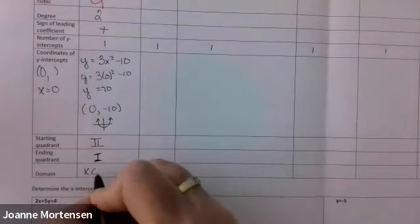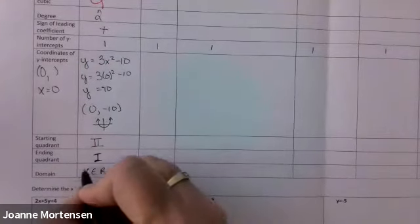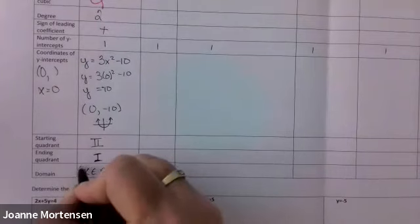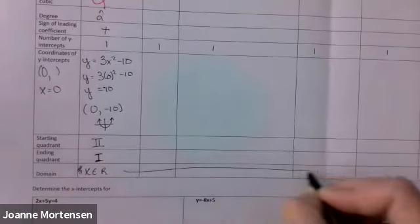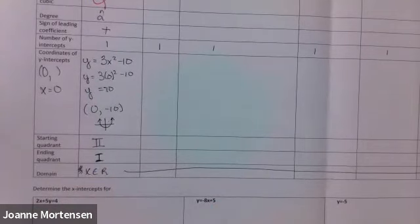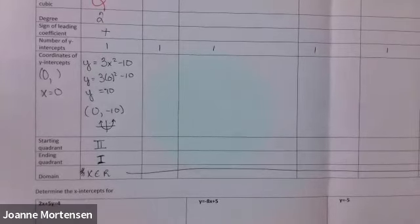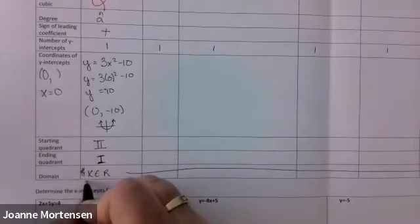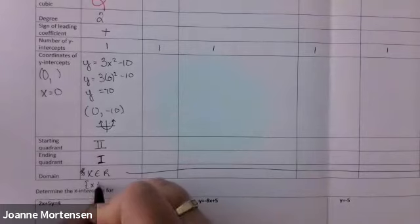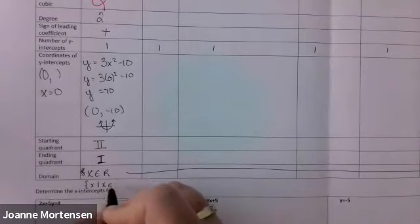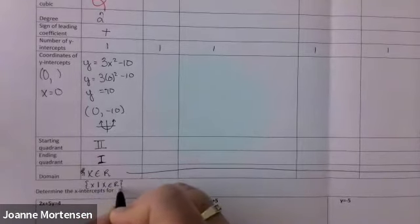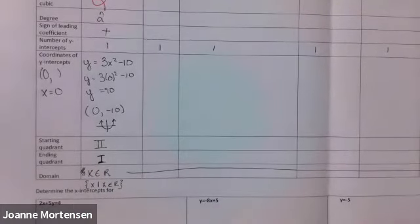The domain: x is an element of the reals. It should look like: x such that x is an element of the reals. I'm okay if you just say 'xER' — that goes all the way across.